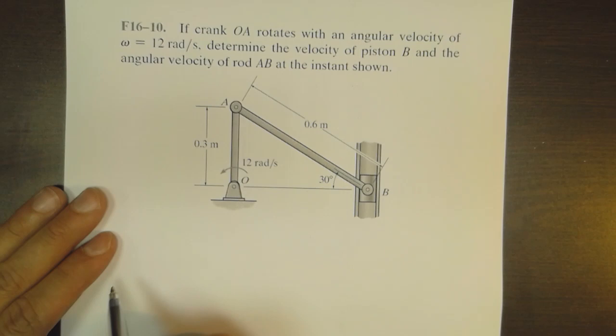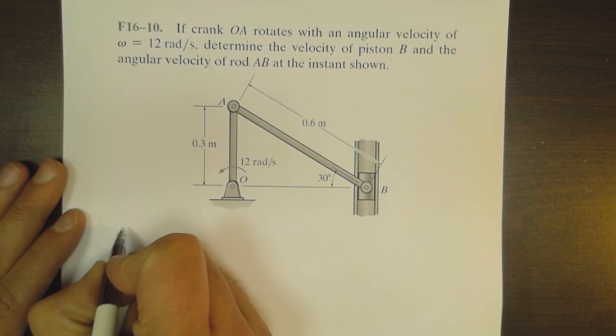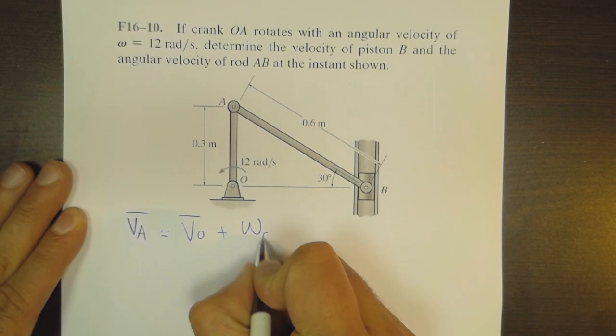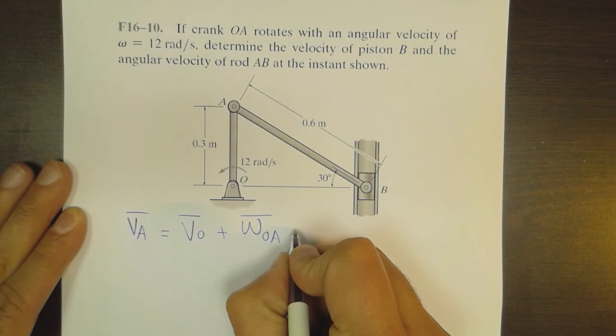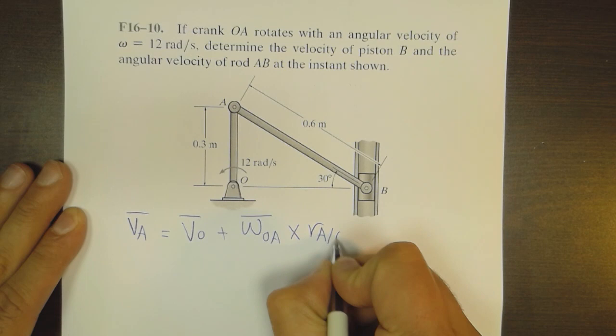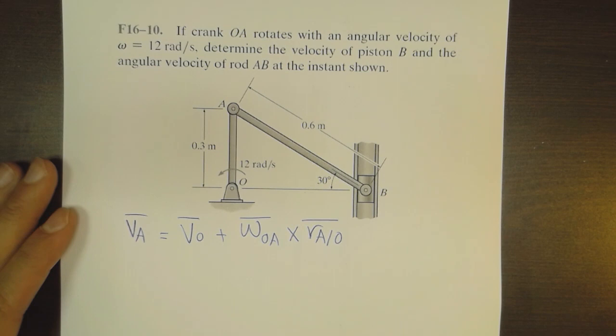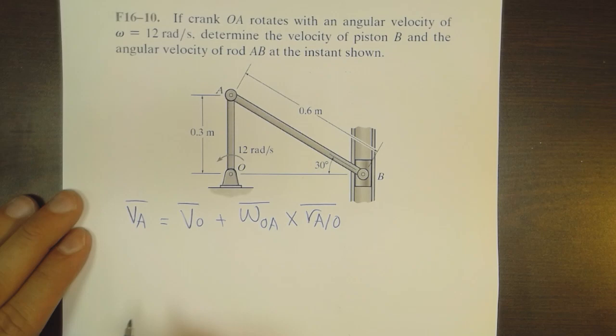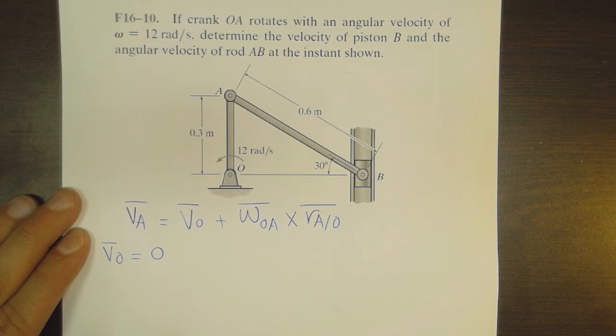We start with the fundamental equation that relates velocities at different points: V_A equals V_O plus omega of the crank OA cross product R_A with respect to O. We notice that point O is fixed, so the velocity V_O is equal to zero because it doesn't move.